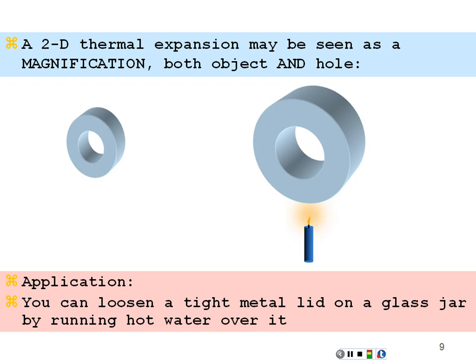Another point: we're talking about a two-dimensional expansion in the case of the hole. But any one dimension on this object will expand according to the linear expansion coefficient. So if I were thinking about the diameter of this hole, I could find out how much the diameter expanded by using the linear expansion, as opposed to calculating the area expansion.